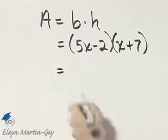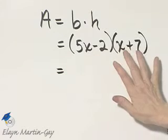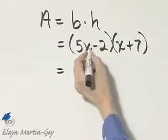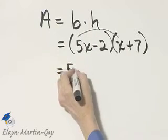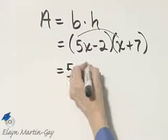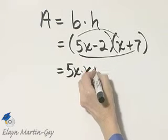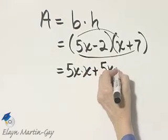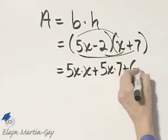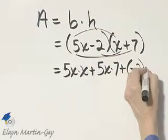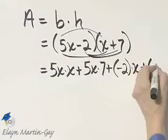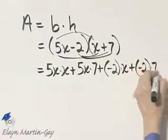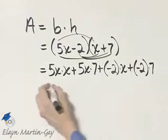So how do we find the area? We multiply this binomial by this binomial using the FOIL property. First times first, that's 5x times x. Outer product, plus 5x times 7. Inner product, plus negative 2 times x. Last times last, plus negative 2 times 7.